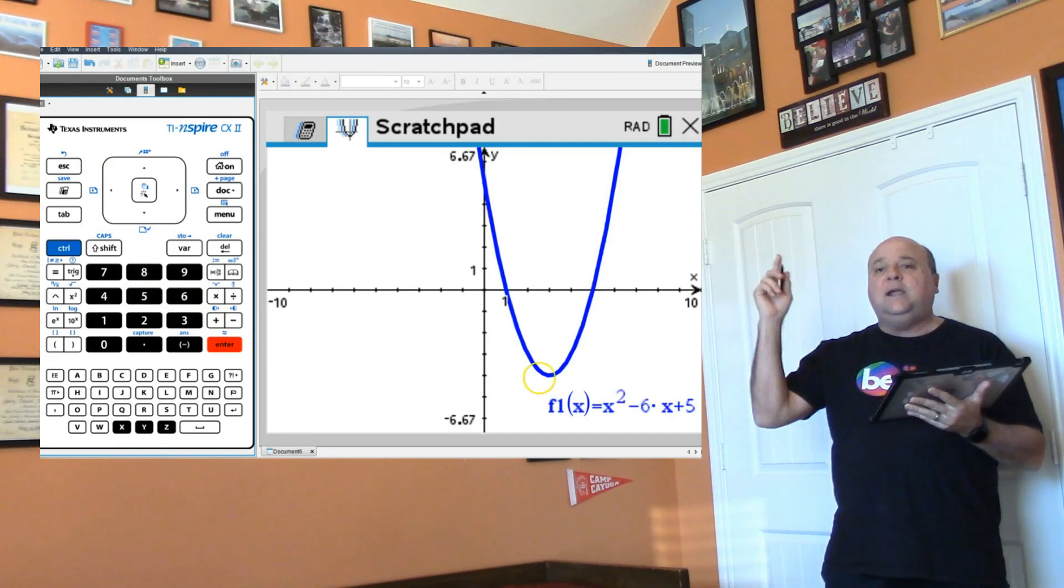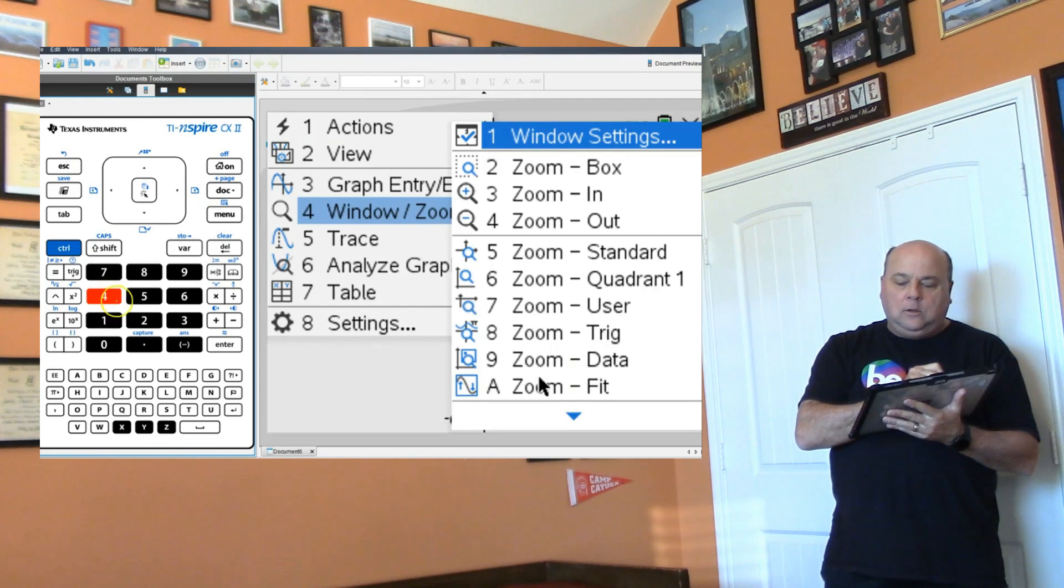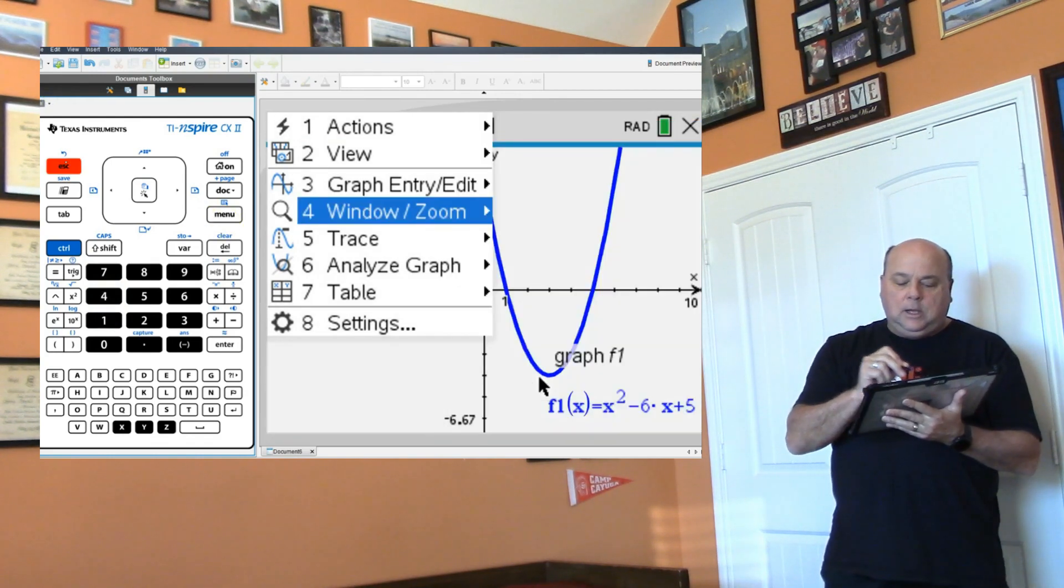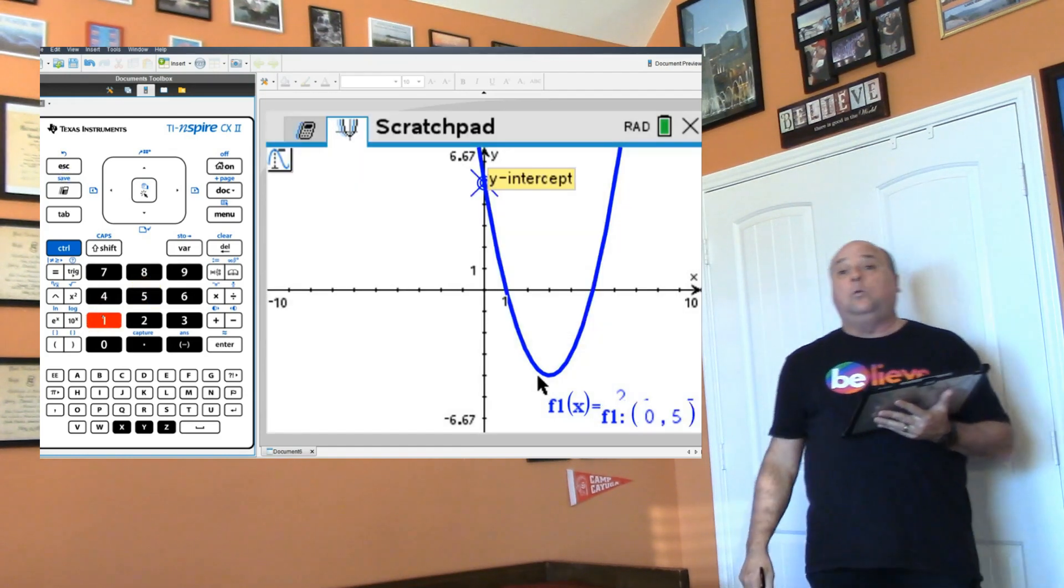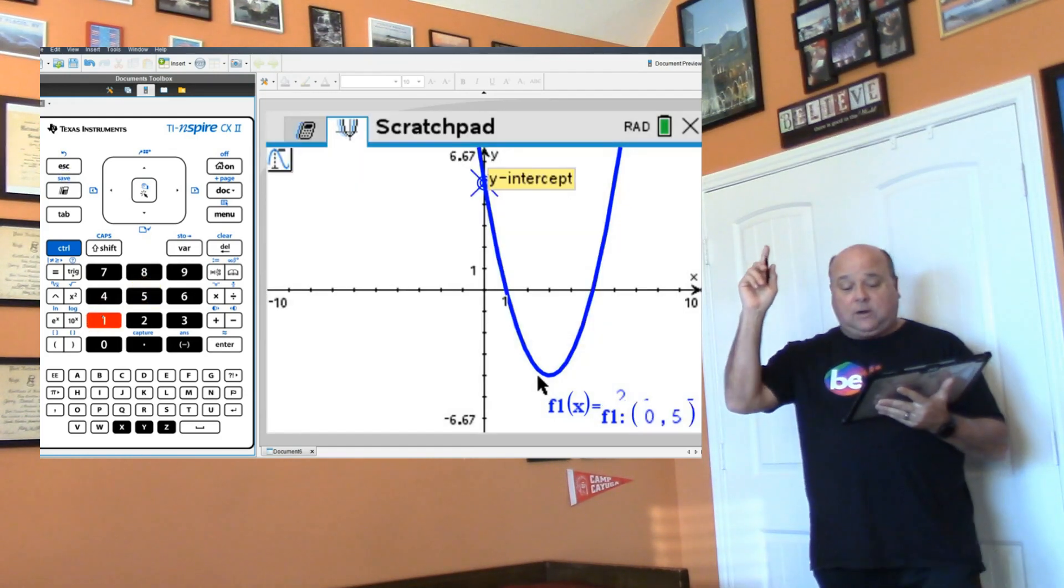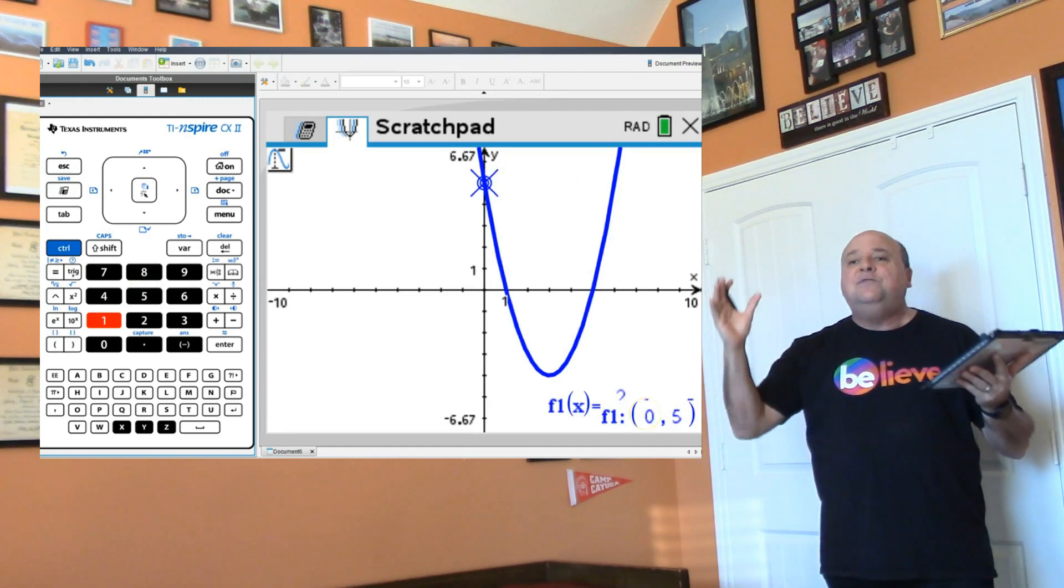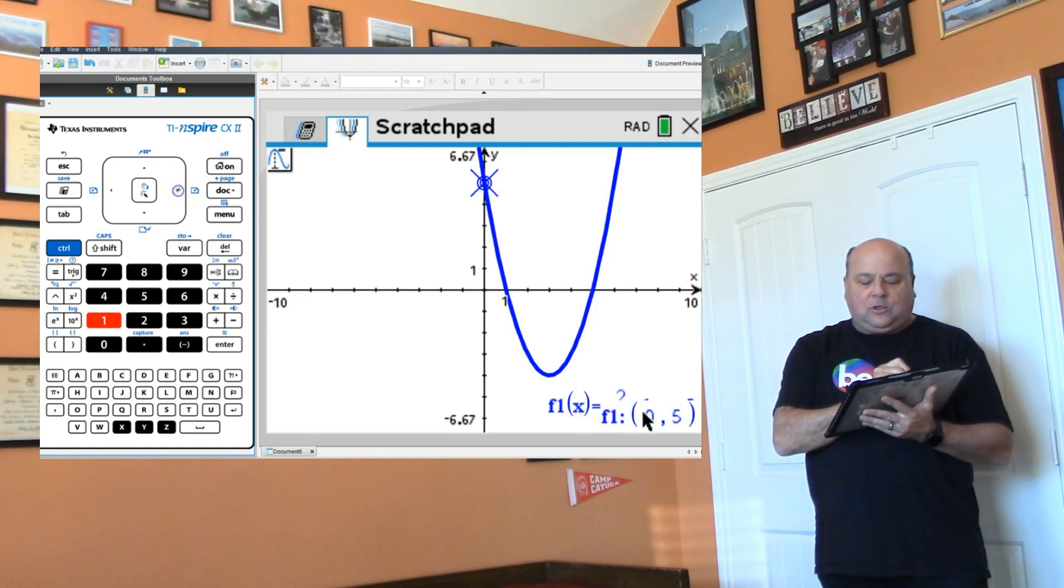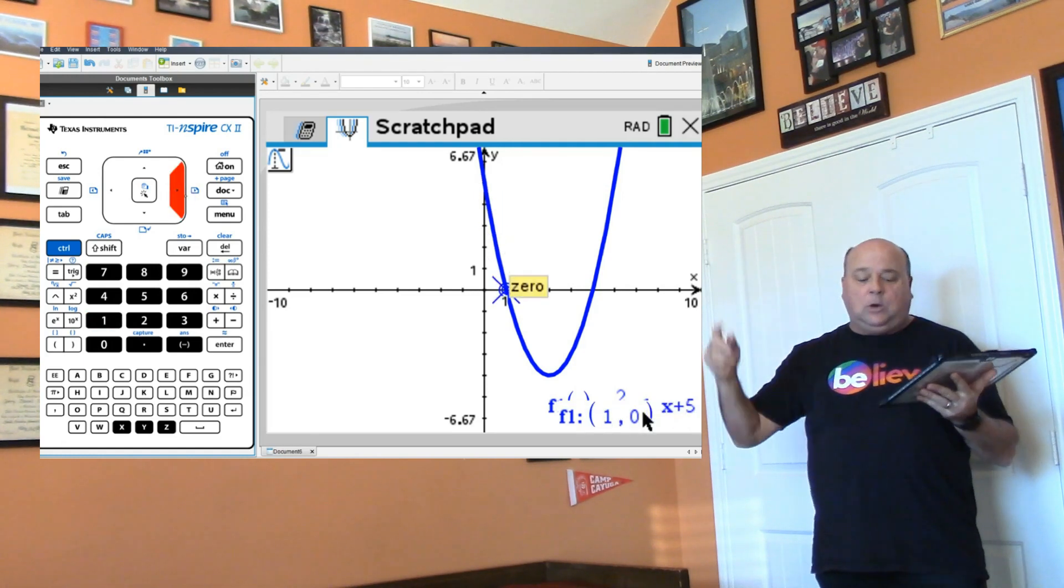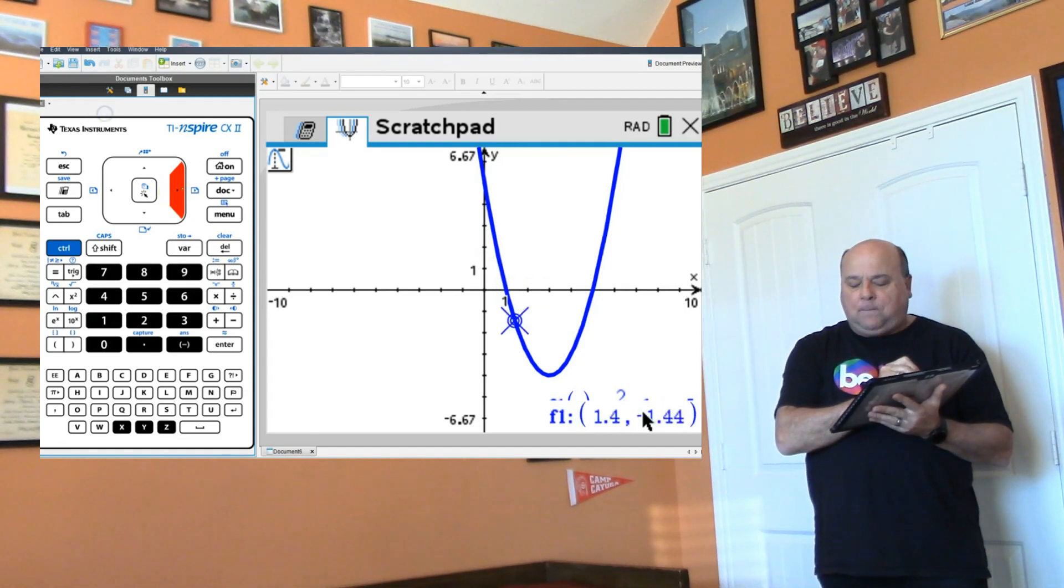Now I'm going to hit menu, trace, and then menu 4-1-3 for spreadsheet. Notice it starts off at the y-intercept at (0, 5). This calculator tells you the parts of the parabola. I'm going to hit the right arrow button and notice that my first zero is 1, the x-intercept. Keep going to the bottom.